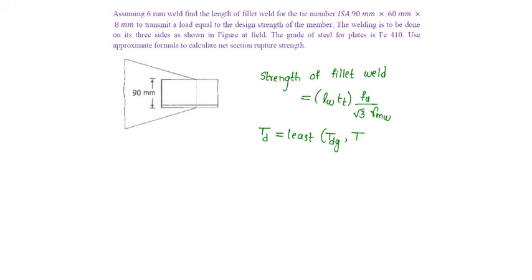TDG and net section rupture strength TDN. TDG is given as gross area into fy by gamma m0.